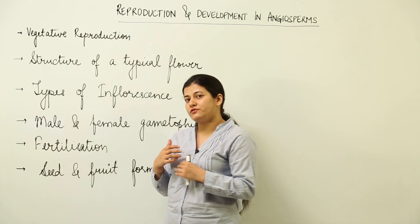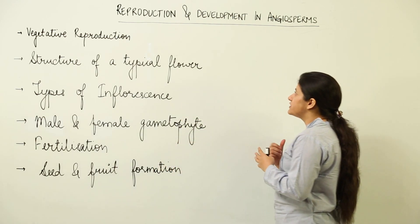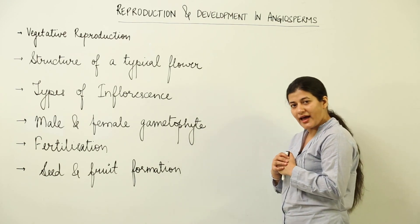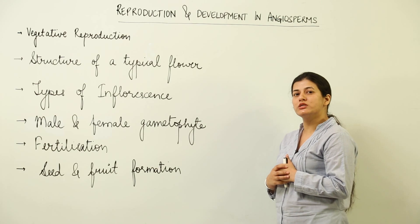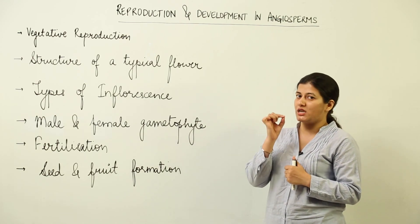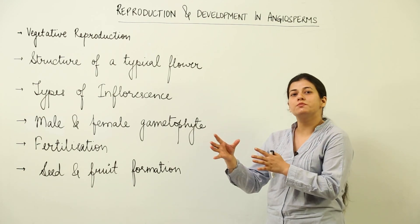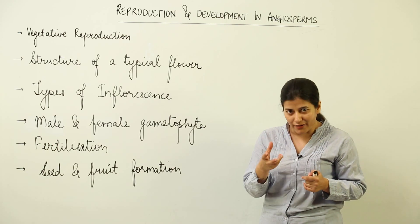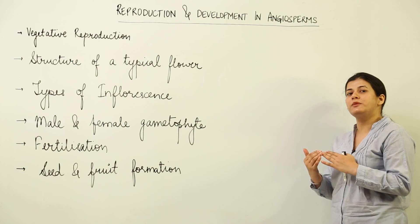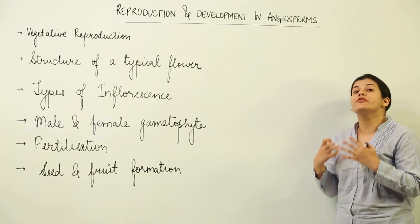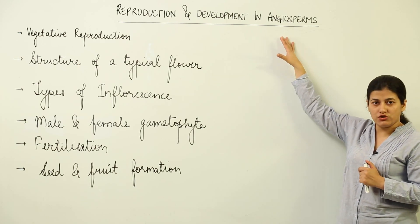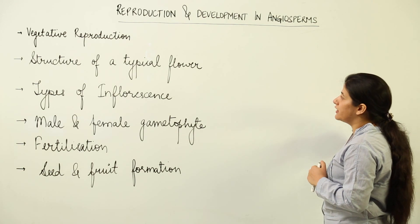Recall your knowledge from the previous class, class 11, where we studied that there are 5 different divisions in the plant kingdom and the most advanced one was that of angiosperms. In angiosperms, the most characteristic feature that distinguishes them from other kinds of plants is the flower. So what we are going to see in this chapter is how those plants which bear flowers reproduce. The topic here is reproduction and development in the angiosperms, or interchangeably, in the flowering plants.